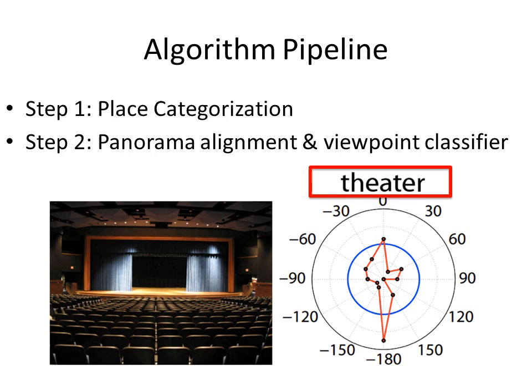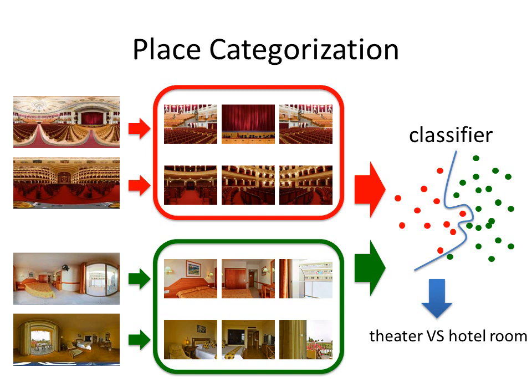This is the pipeline of our algorithm. The first step is place categorization. The second step is to simultaneously align the panoramas and train a viewpoint classifier. The place categorization step is simple. Training images are generated by sampling many different viewpoints in each panorama. The viewpoint information is ignored, and all of the images are put together into a nonlinear classifier to train the place classification model. Because we use a nonlinear classifier, we can trust it to find the complicated decision boundary without worrying too much about the viewpoint.